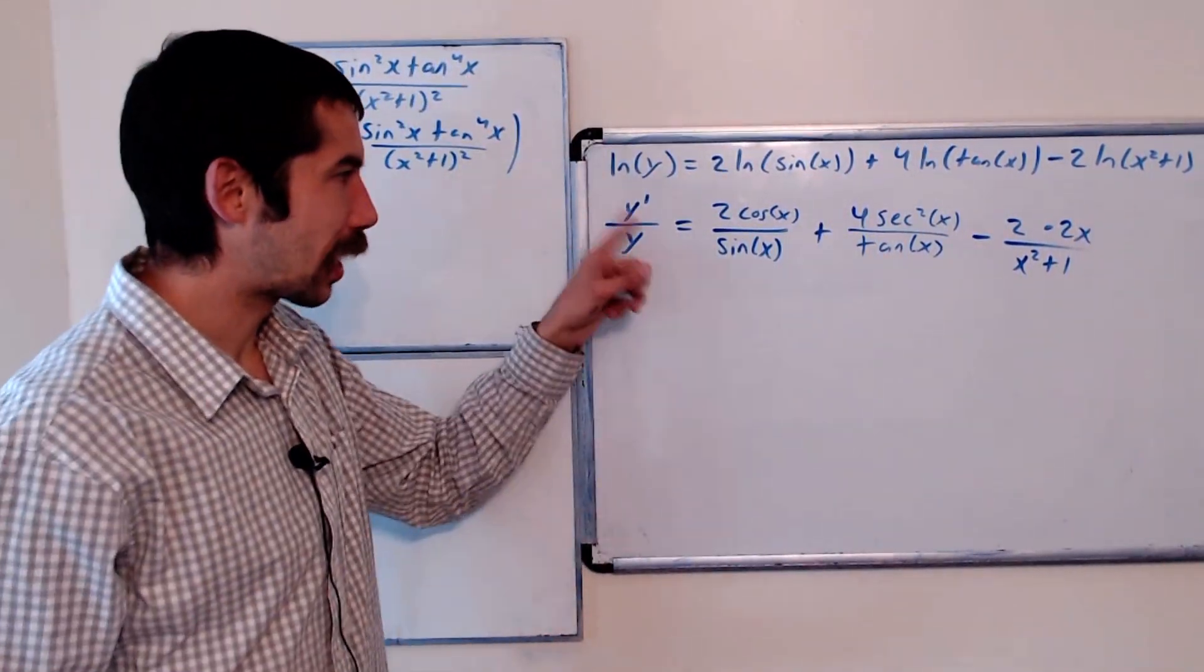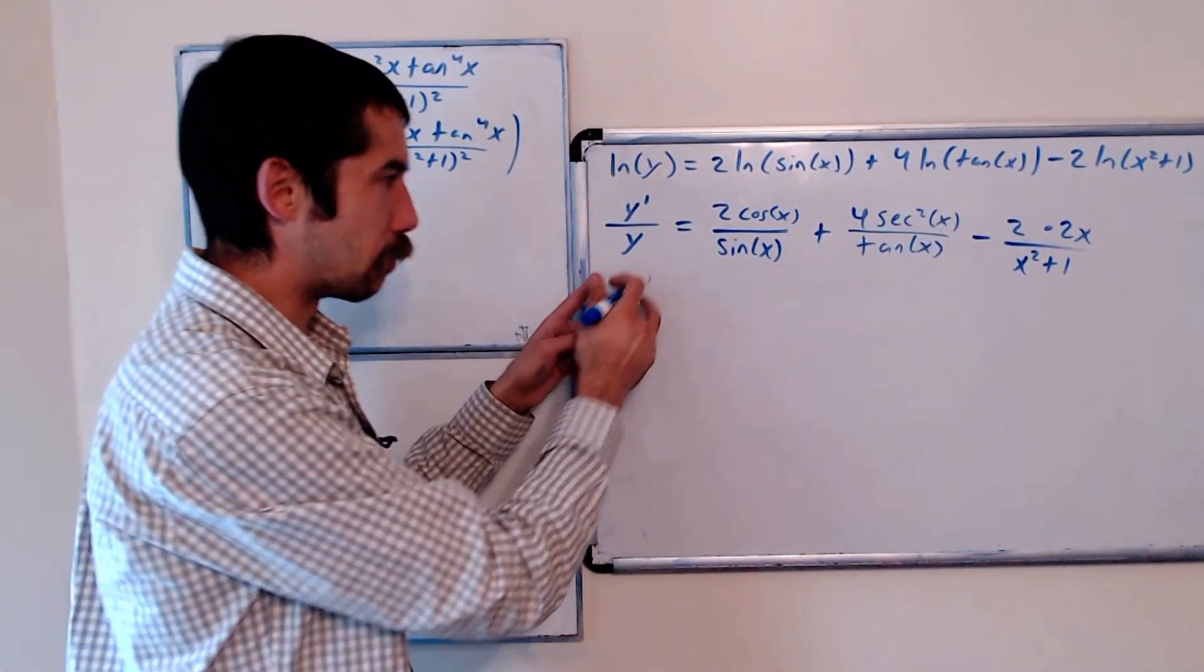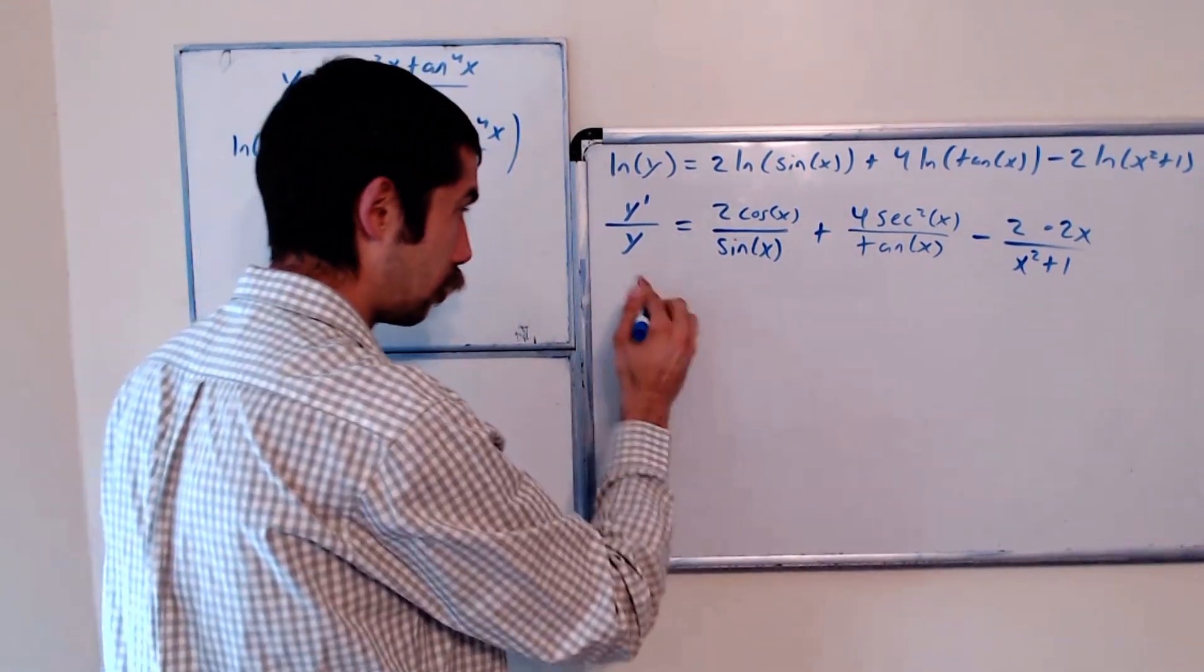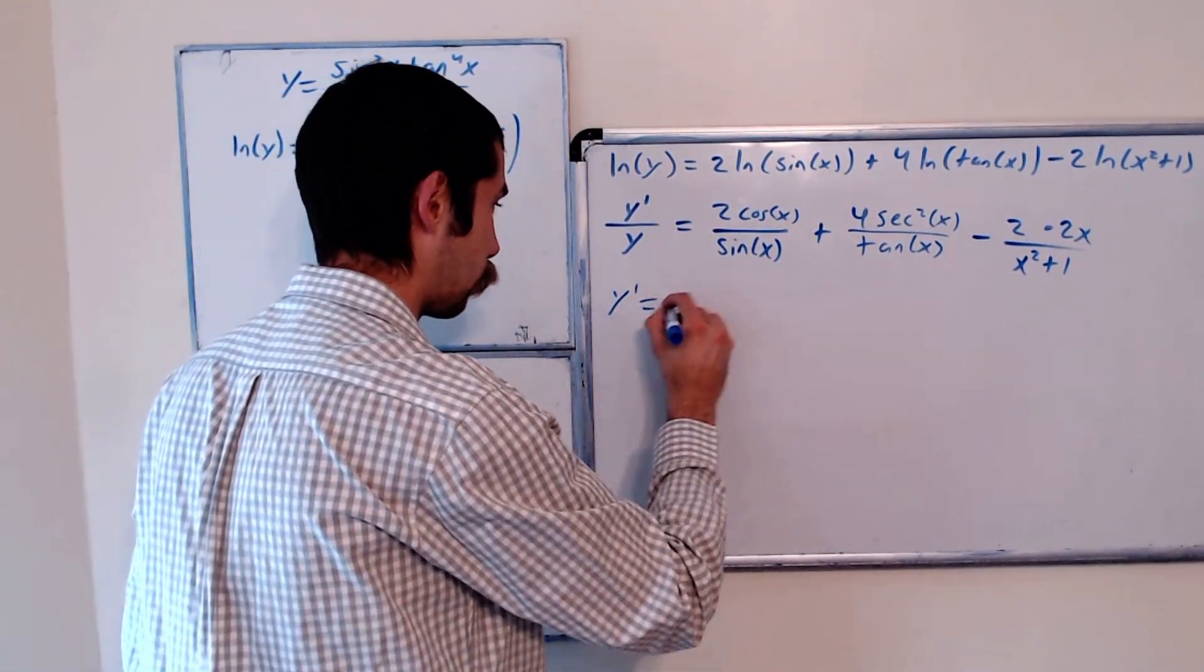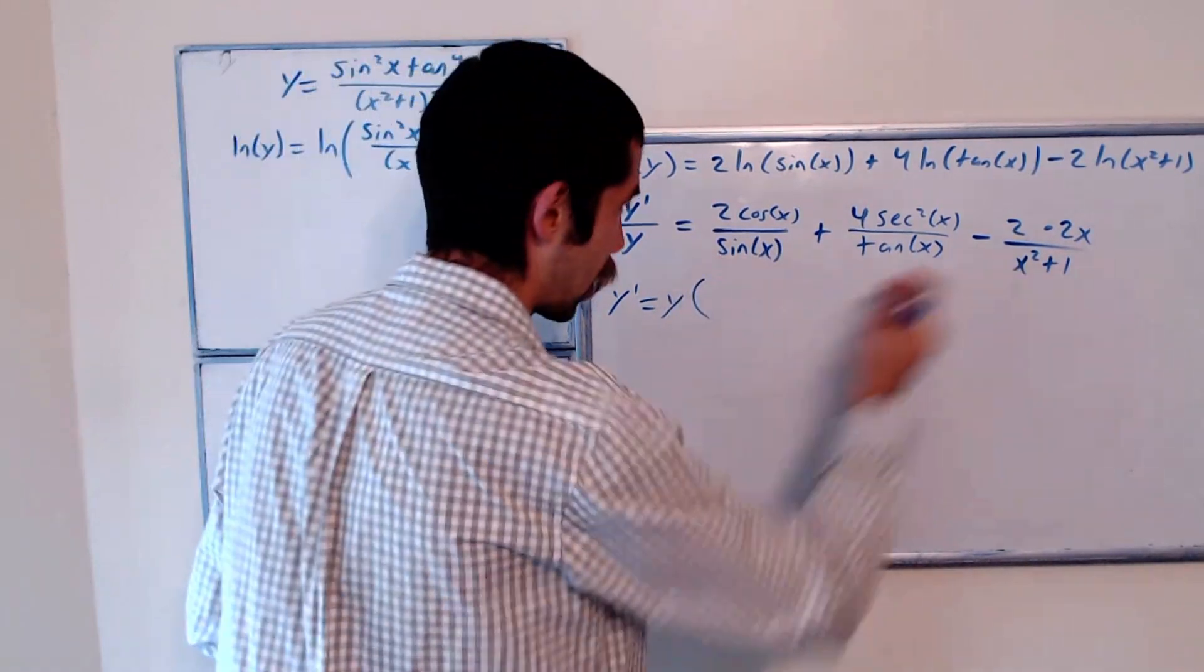Alright, now we want to get y prime by itself. So let's multiply both sides by y. So y prime is equal to y times this guy here.